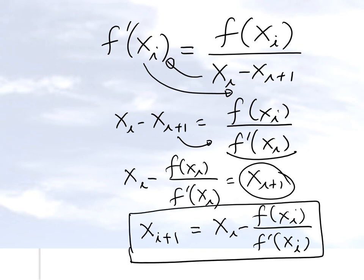It's a recursive formula: you take the current estimate of the root, find the value of the function and its derivative at that point, and compute the next estimate. You keep doing this until you are satisfied that you've obtained a reasonable estimate. In the next slide, we'll talk about the algorithm of the Newton-Raphson method.